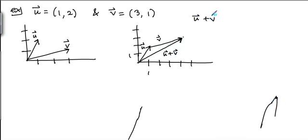And u plus v is 1 plus 3, 2 plus 1. So that's 4, 3. That is the endpoint of vector u plus v. So you can see that's what it is. And this is my vector u plus v right there.